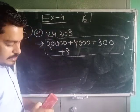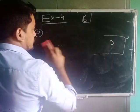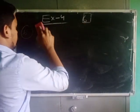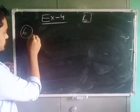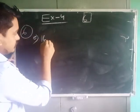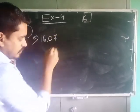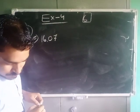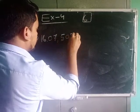So another one I have to write. You see number E: 1, 6, 0, 7, 5, 0, 3.